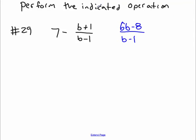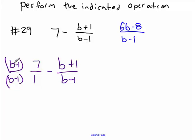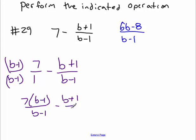Number 29, perform the indicated operation. We're subtracting — we have a whole number subtracted by a fraction. We have to make this a fraction, right? So that's just like 7 over 1 minus b plus 1 over b times b minus 1. We need a common denominator — we need b minus 1 for the common denominator. So over here we're going to multiply this by b minus 1 over b minus 1. We're going to have 7 times b minus 1 over b minus 1, minus b plus 1 over b minus 1.